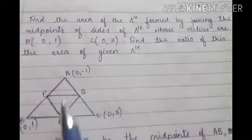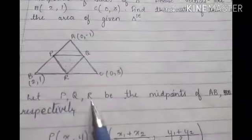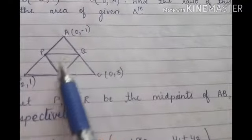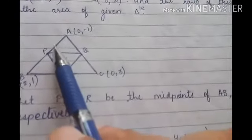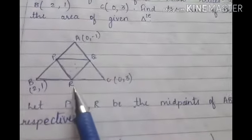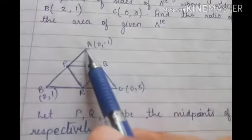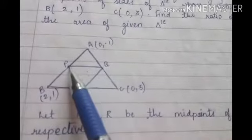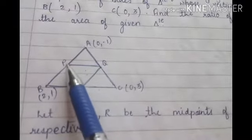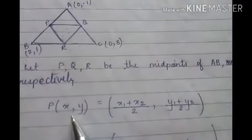We need to find the area of the big triangle ABC as well, to find the ratio — we will see that later. Since P, Q, R are the midpoints of AB, AC, and BC respectively, and their coordinates are not given to us, we need to find them. To find the area of a triangle, we need the coordinates of its vertices. So we need the coordinates of P, Q, and R. Since P is the midpoint of AB, we can find its coordinates using the midpoint formula.